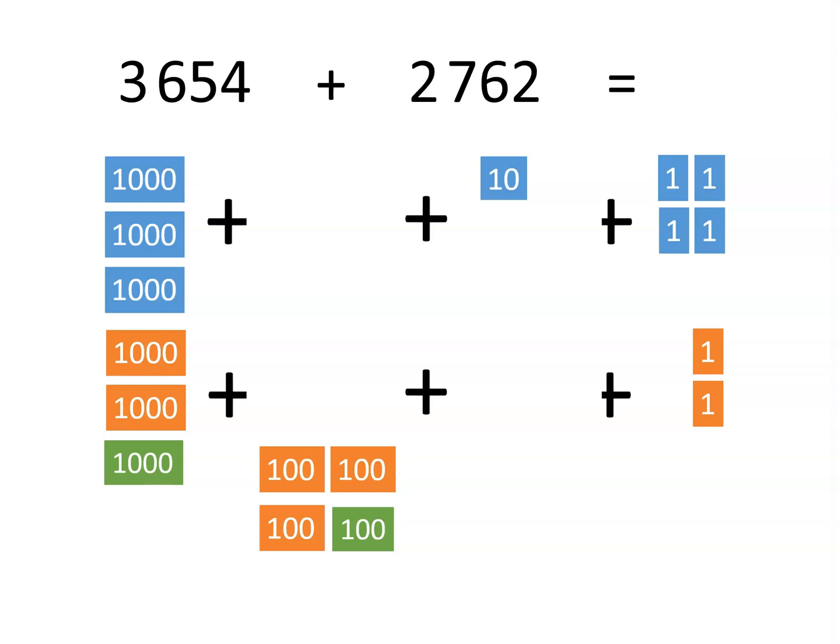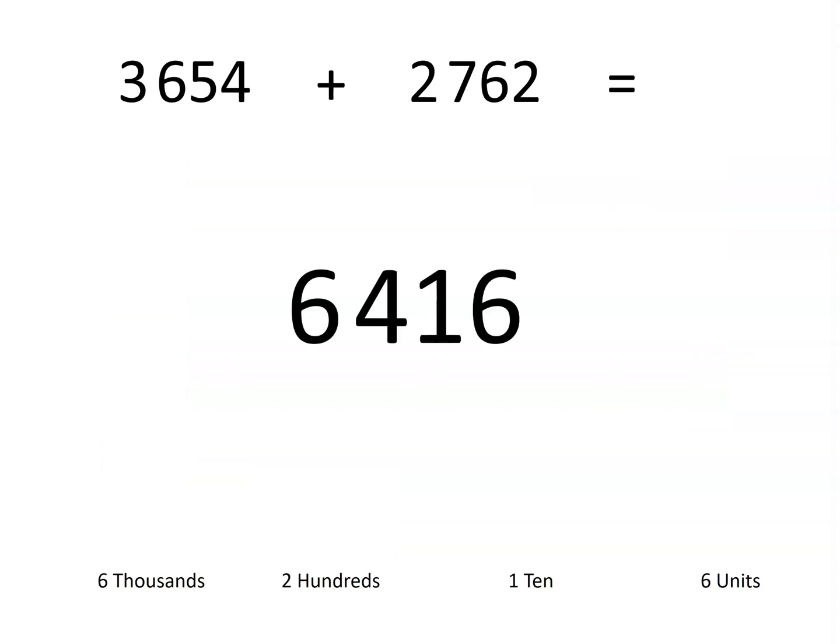Now that we have regrouped everything that we have 10 of, we can count the totals for each place value. Noting that we have 6 thousands, 4 hundreds, 1 ten, and 6 units. This means that our sum is 6,416.